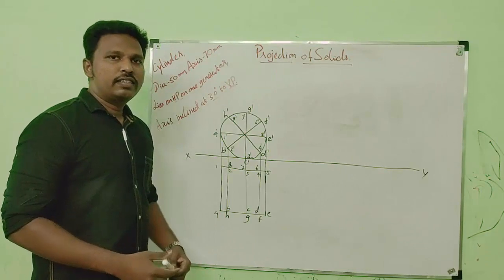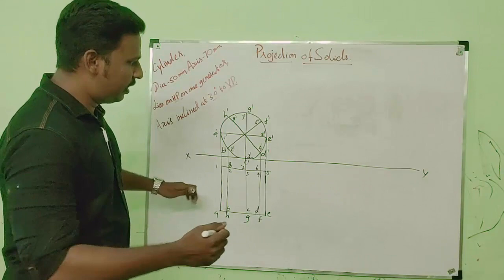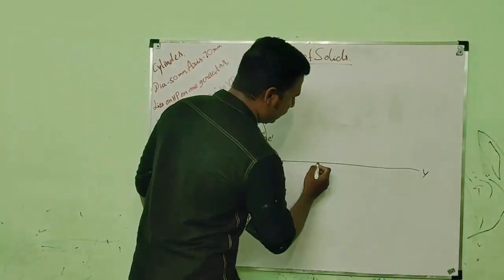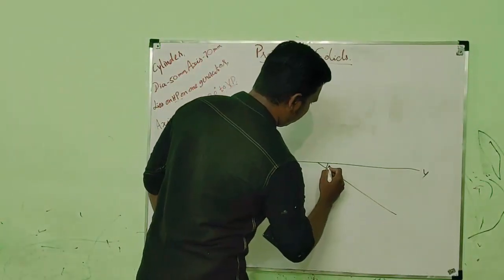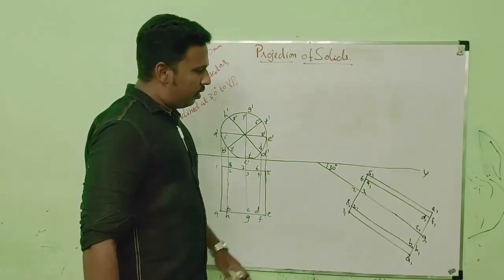And now let us include the angle which is 30 degrees into VP. So let us draw the same top view in 30 degree inclination. Now we have finished marking all the points.